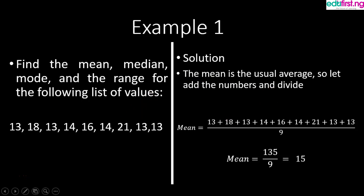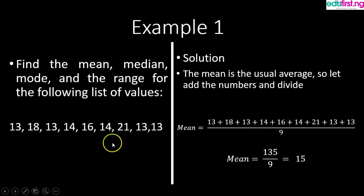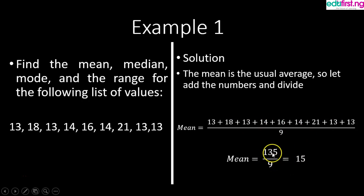We add all these numbers together and divide by the count of the numbers. How many numbers do we have? We have nine numbers — one, two, three, four, five, six, seven, eight, nine — which is the count. The total of all the values is 135, divided by nine, which gives us 15. So our mean is 15.